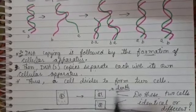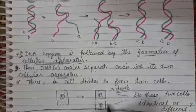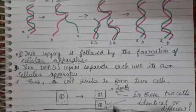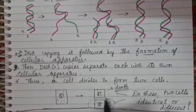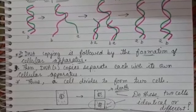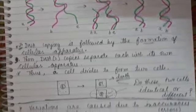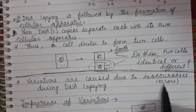But on the other hand, some variations would allow the new cell to survive. This creation of variation is the basis of evolution. So how are these variations caused? These variations are caused due to inaccuracies or errors during DNA copying.